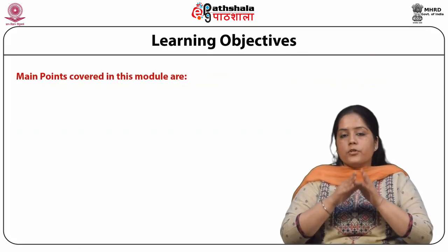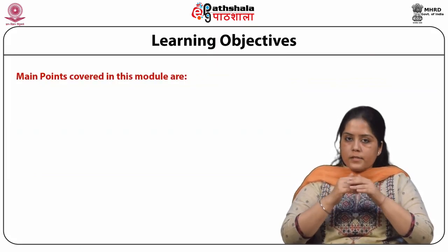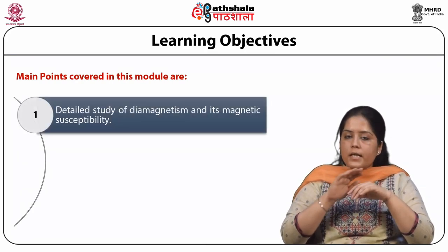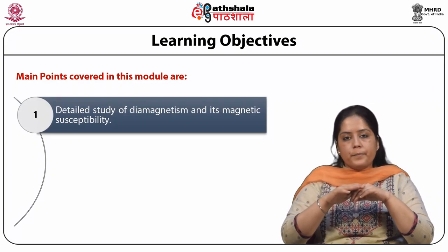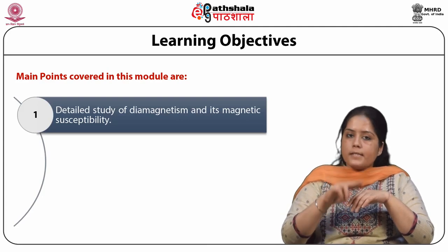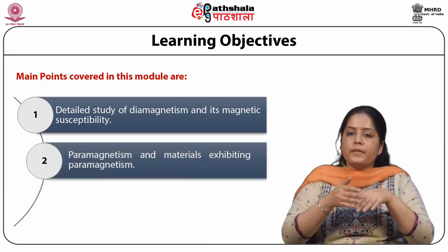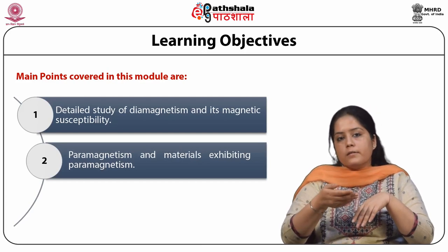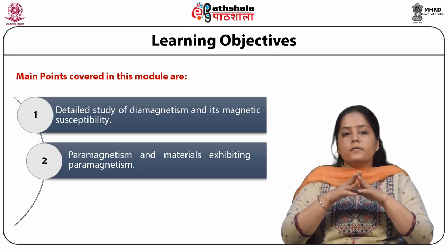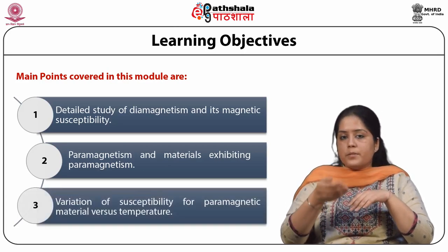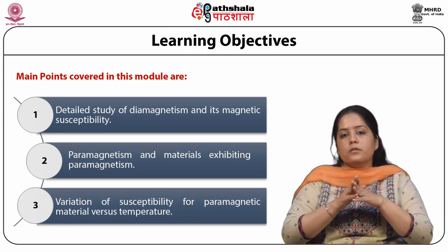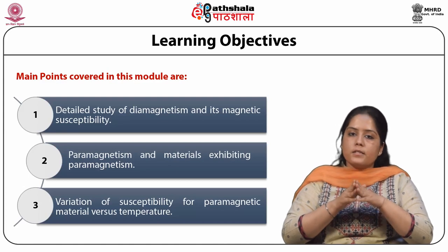The main points which will be covered in this module are: first, the detailed study of diamagnetism and its magnetic susceptibility. Second, paramagnetism and the materials exhibiting paramagnetism. Variation of susceptibility for paramagnetic material versus temperature is also discussed in this module.